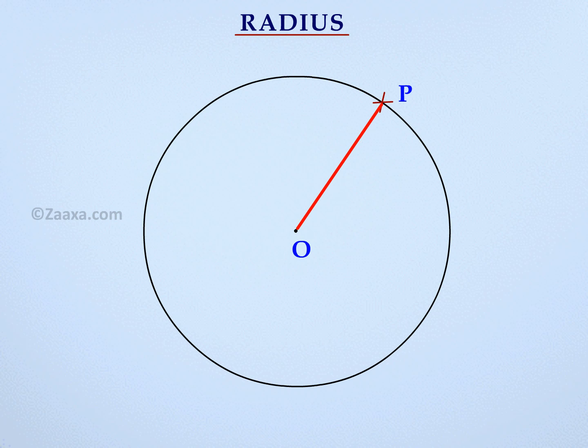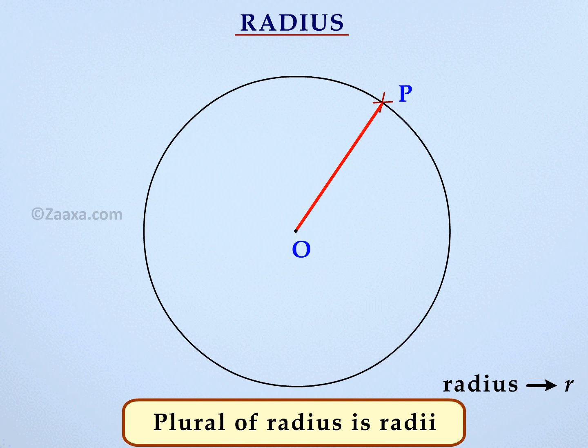Radius is usually denoted by R. Keep in mind that the plural of radius is radii.